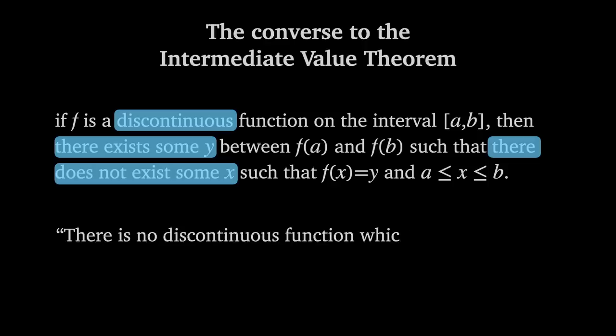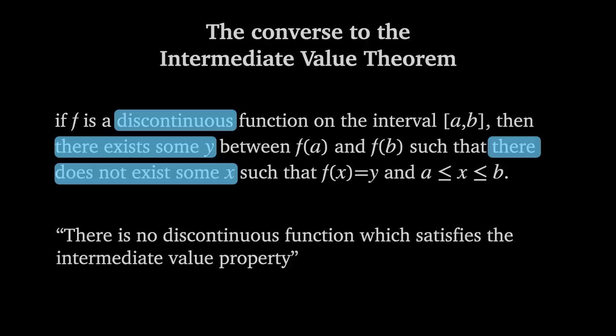In short, there is no discontinuous function which satisfies the Intermediate Value Property. In this video, we'll show that the base 13 function satisfies the Intermediate Value Property but is discontinuous everywhere, making it a counterexample to the converse of the Intermediate Value Theorem.